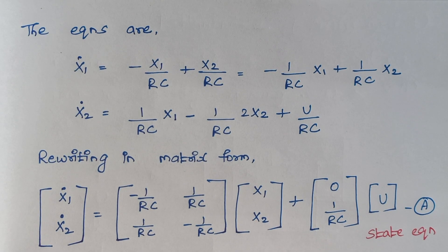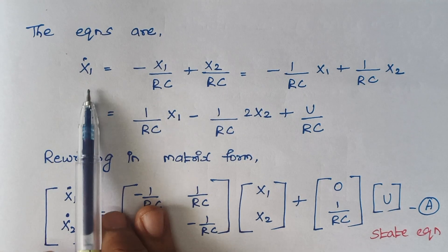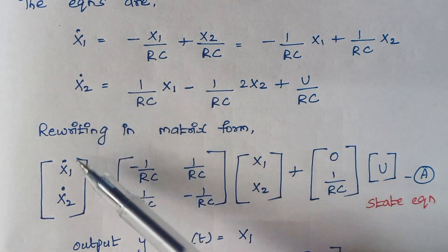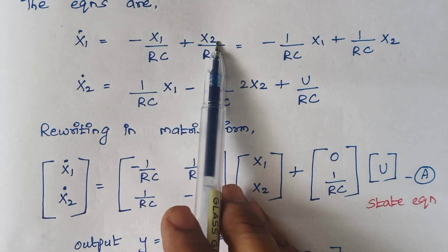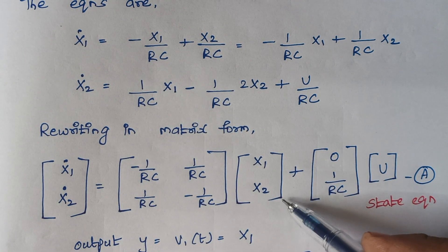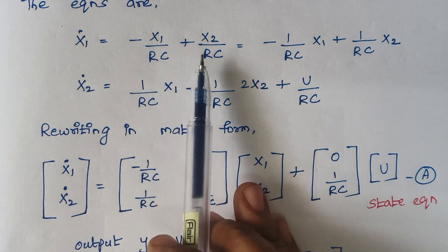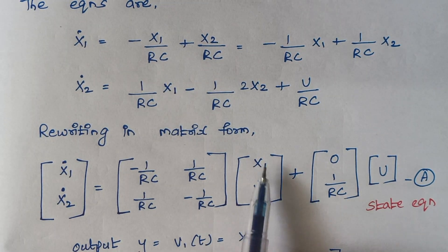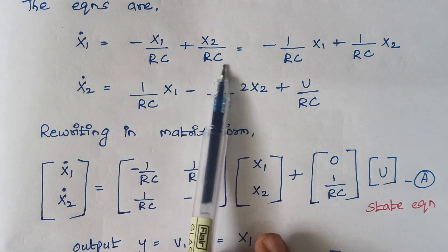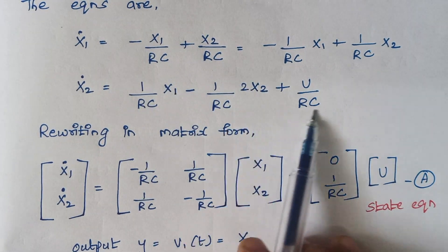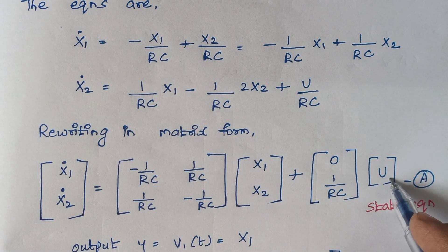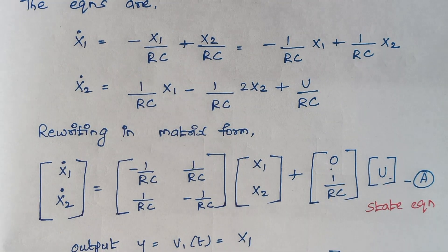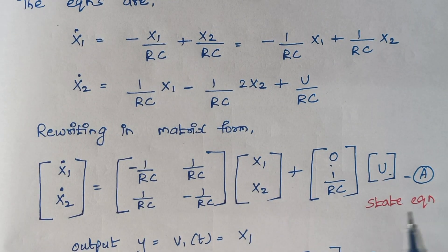Writing both expressions together in matrix form: the column matrix [x1-dot, x2-dot] equals the system matrix multiplied by [x1, x2] plus the input matrix multiplied by U. The coefficient matrix has entries: −1/(RC) and +1/(RC) in the first row, and +1/(RC) and −1/(RC) in the second row. There is no U term in the first equation, so the input vector is [0, 1/(RC)]ᵀ. This is the state equation.